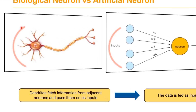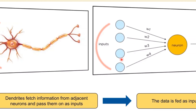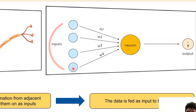In the case of inputs in biological neurons, dendrites fetch the information from adjacent neurons and pass them as inputs. The values x1, x2, up to xn are considered as the input.